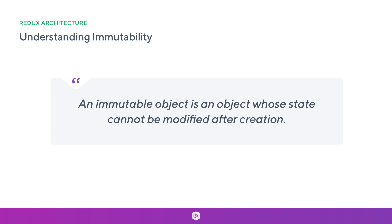An immutable object is an object whose state cannot be modified after creation. So let's assume we create a basic object: const todo equals a new object with a label and a completed property. After we've created this object, treating it as immutable means we can't change it after creation — we can't simply add a new property. If we want to add or change a property, we take a copy, make the changes on a new object, and return that as a new object.